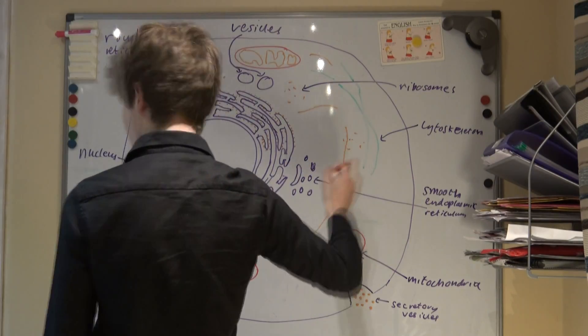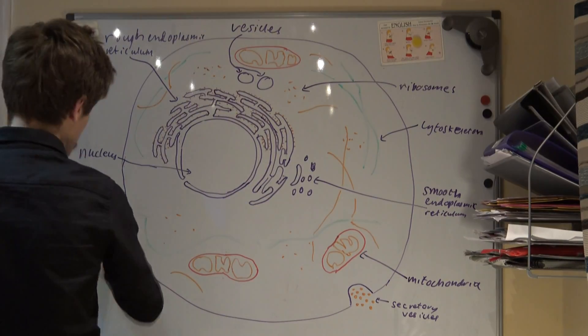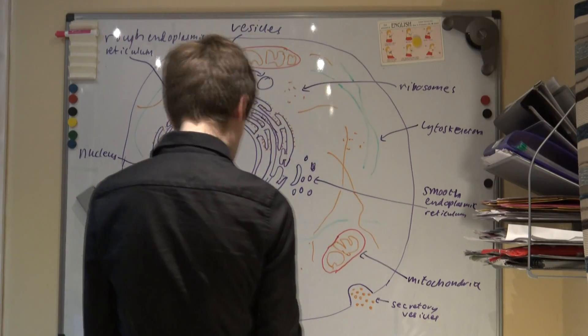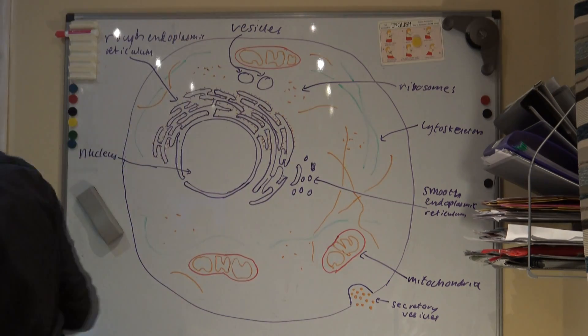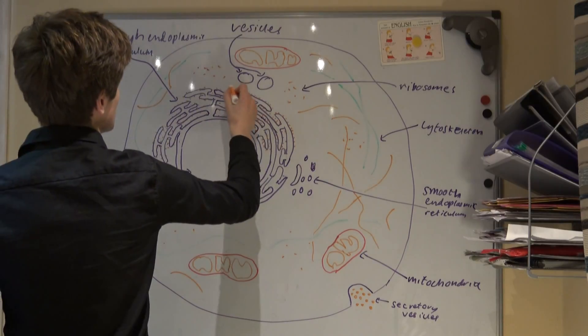The second component is the microtubules. These are globular tubulin proteins that polymerize to form tubes that are used to create a scaffold-like structure that determines the shape of the cell. They also act as tracks for the movement of organelles, such as vesicles around the cell.